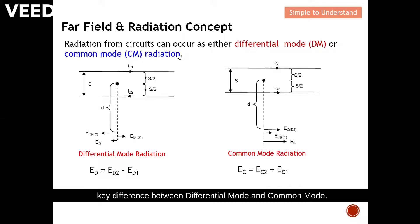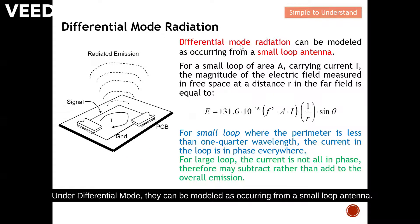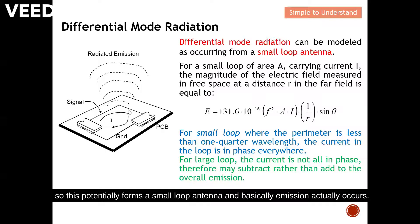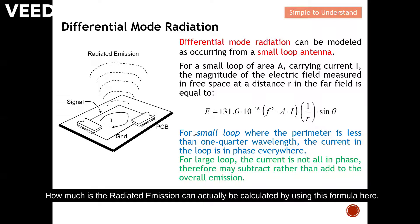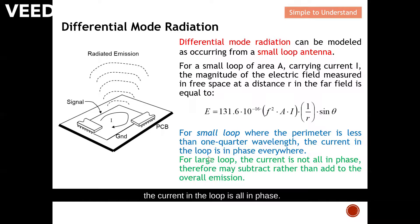Differential mode can be modeled as occurring from a small loop antenna. You can see there is a current flow in a loop, so this potentially forms a small loop antenna and emission can occur. For a small loop carrying current I, the magnitude of the electric field measured in free space at a distance r can be expressed in this equation. When there is a current flow in a closed loop, they potentially release emission, and how much radiation can be calculated using this formula.